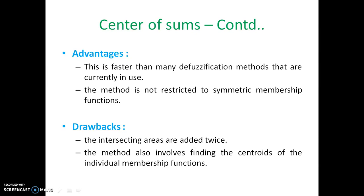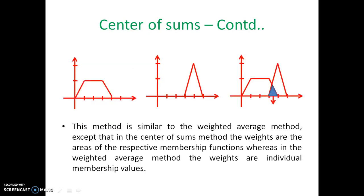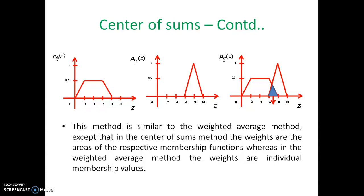The center of sums method also involves finding the centroids of individual membership functions. As shown in the figure, if C1 and C2 overlap, the blue-marked region illustrates the summed area. This method is similar to the weighted average method, except that in the center of sums method the weights are the areas of the respective membership functions, whereas in the weighted average method the weights are the individual membership function values.